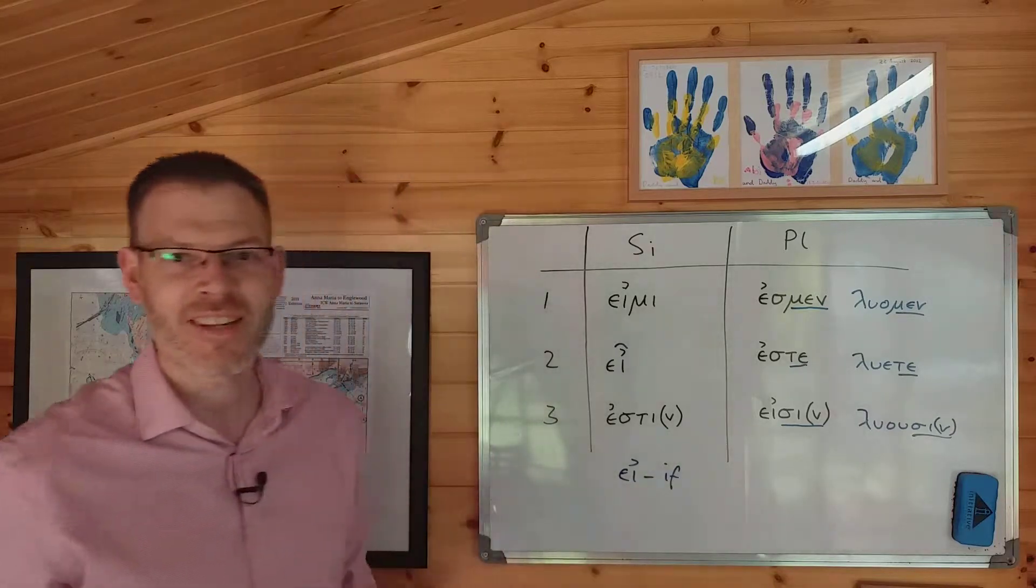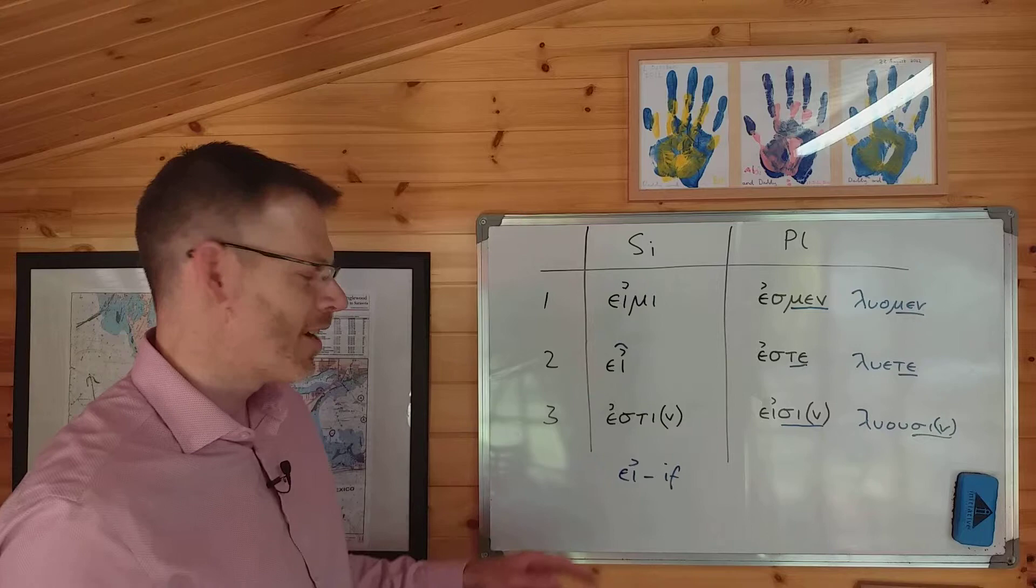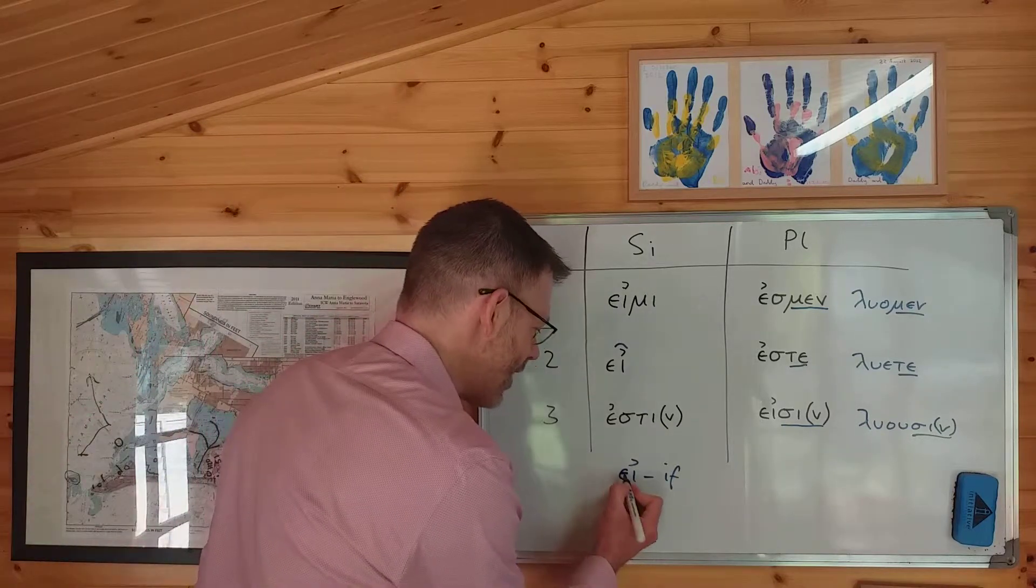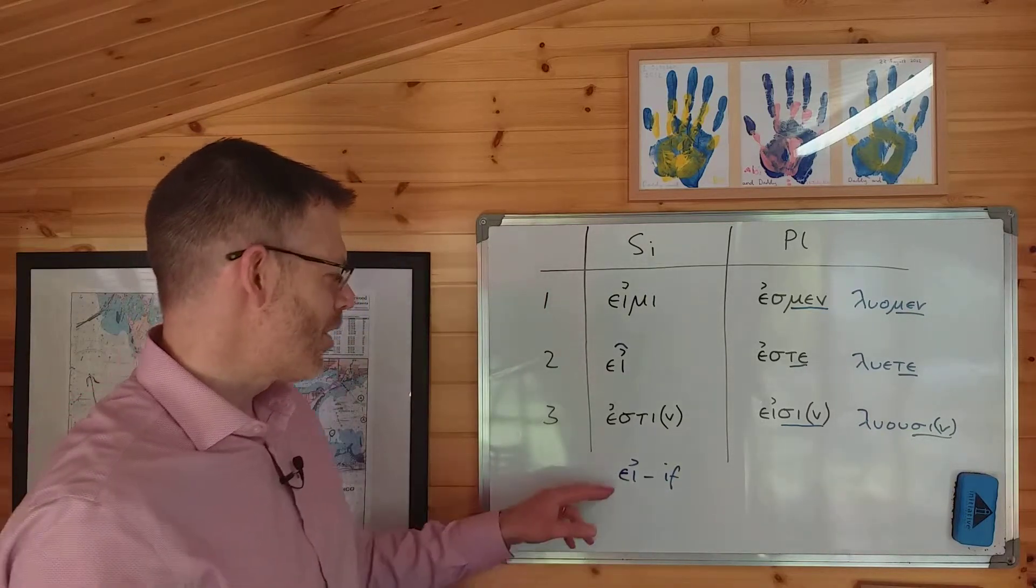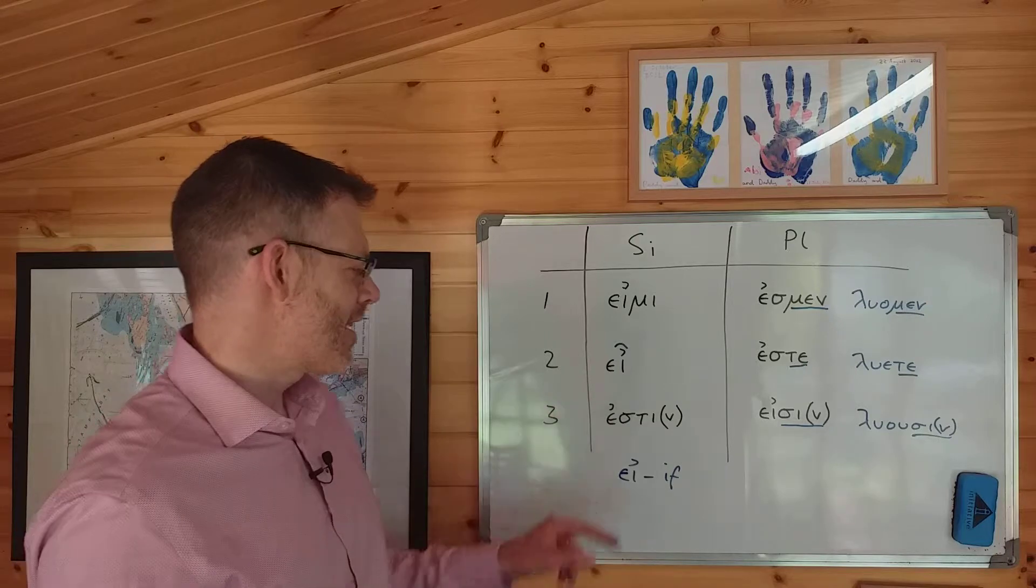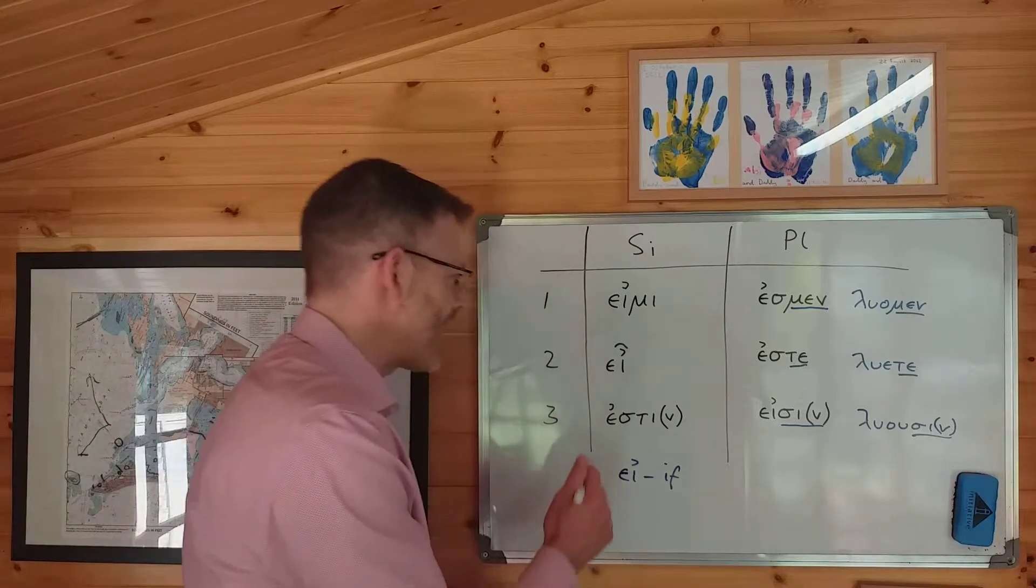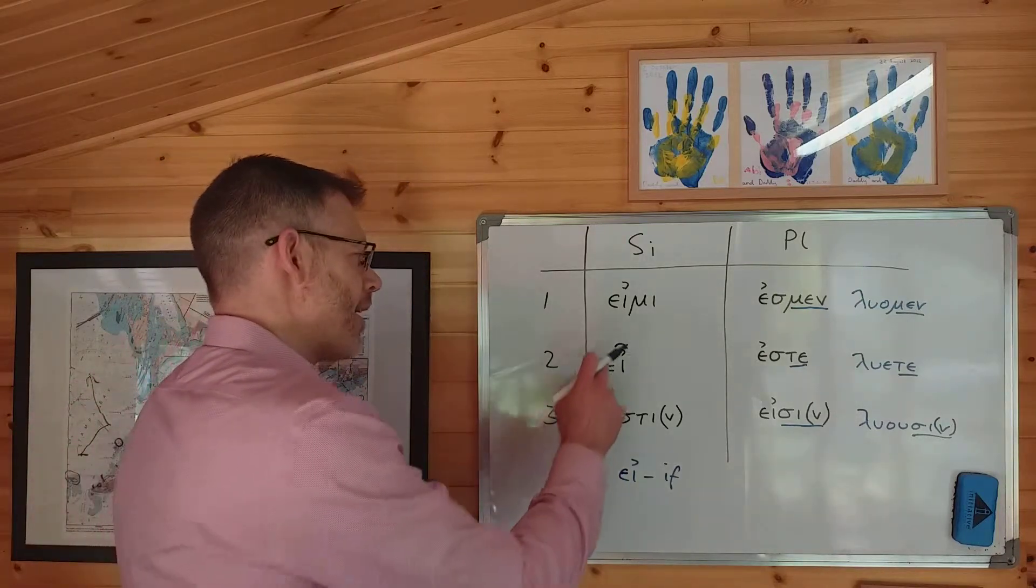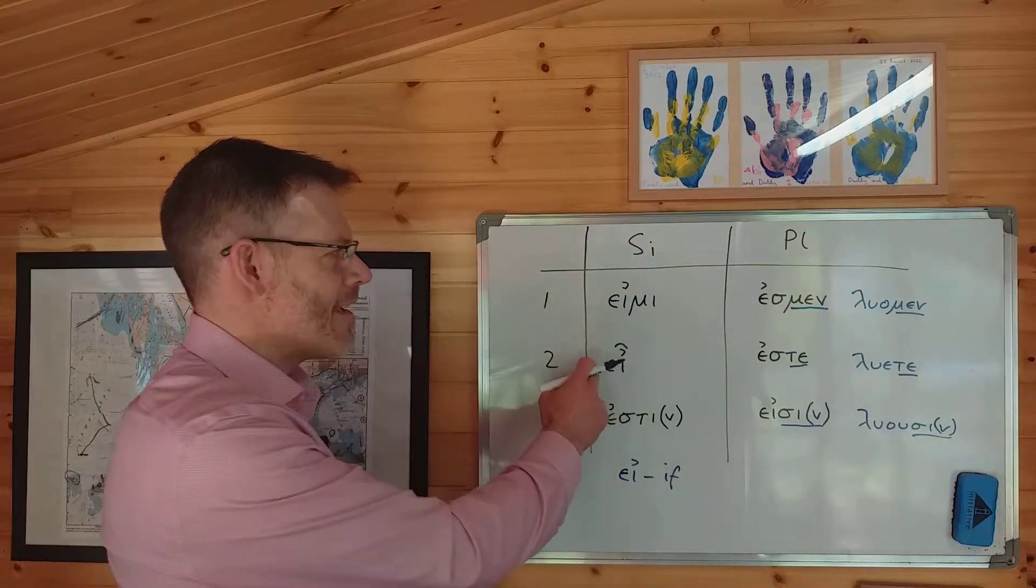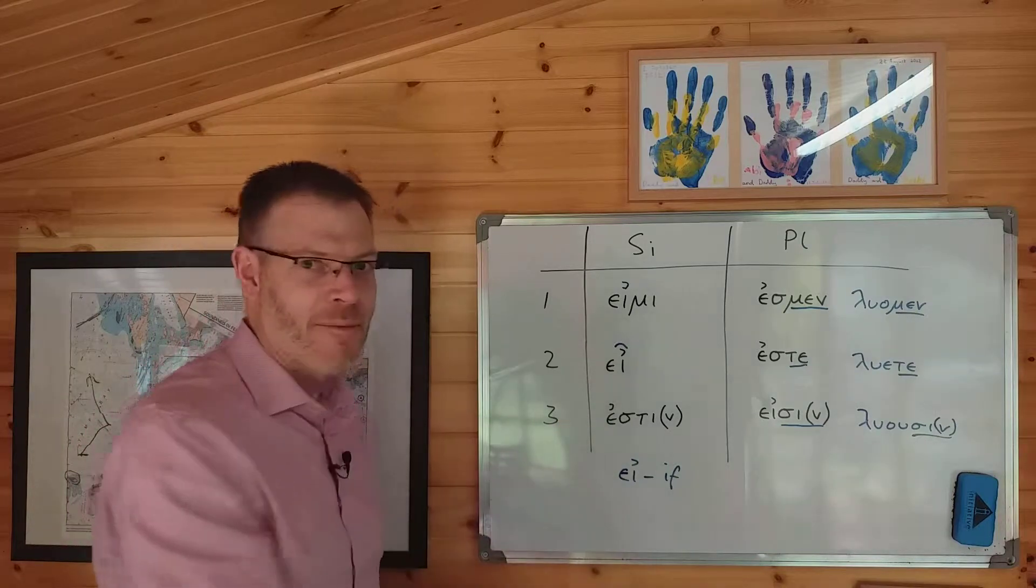And it is just about possible to imagine situations in which, at least at first glance, you might not be able to tell which of these words is actually appearing in a particular text, and therefore the circumflex is used to distinguish εἶ, meaning you are, from εἰ, meaning if.